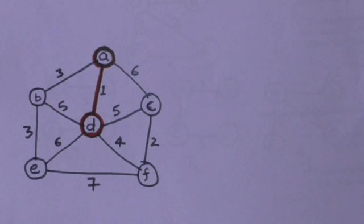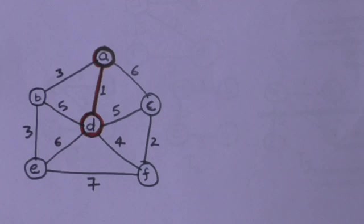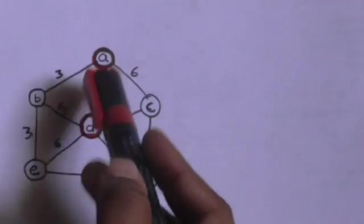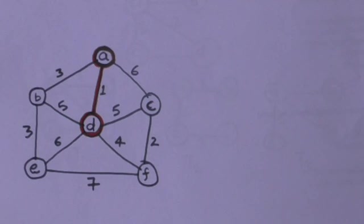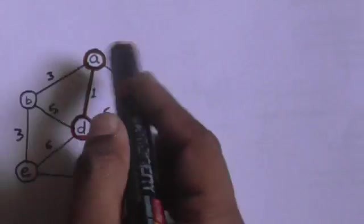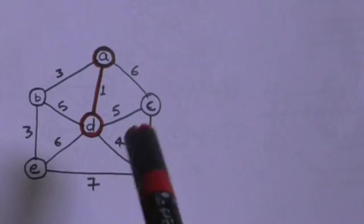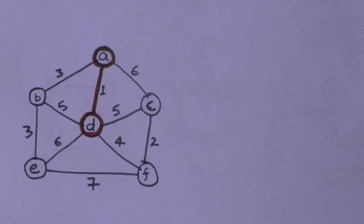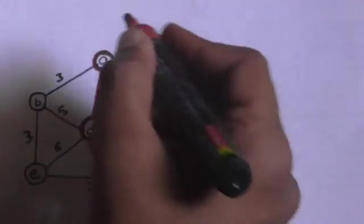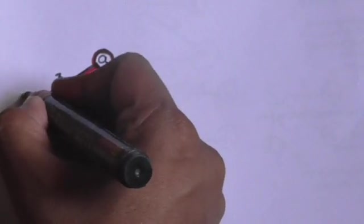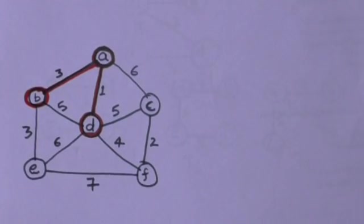Now in the minimum spanning tree there are two vertices: vertex A and vertex D. The edges which join the vertices included in the minimum spanning tree to the vertices not included are AB. The edge with minimum weight among these edges is AB, so we will include edge AB in the minimum spanning tree.